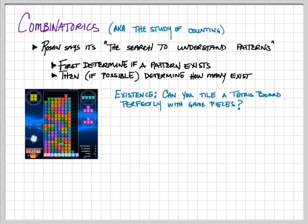A particular pattern that we could ask about is whether you can take a standard Tetris board, so that's a 10 by 20 grid, and tile it perfectly with game pieces. Don't assume that you're playing the game and lines disappear when they're filled in, but can you actually take the different shapes, game pieces, and tile the entire 10 by 20 board?